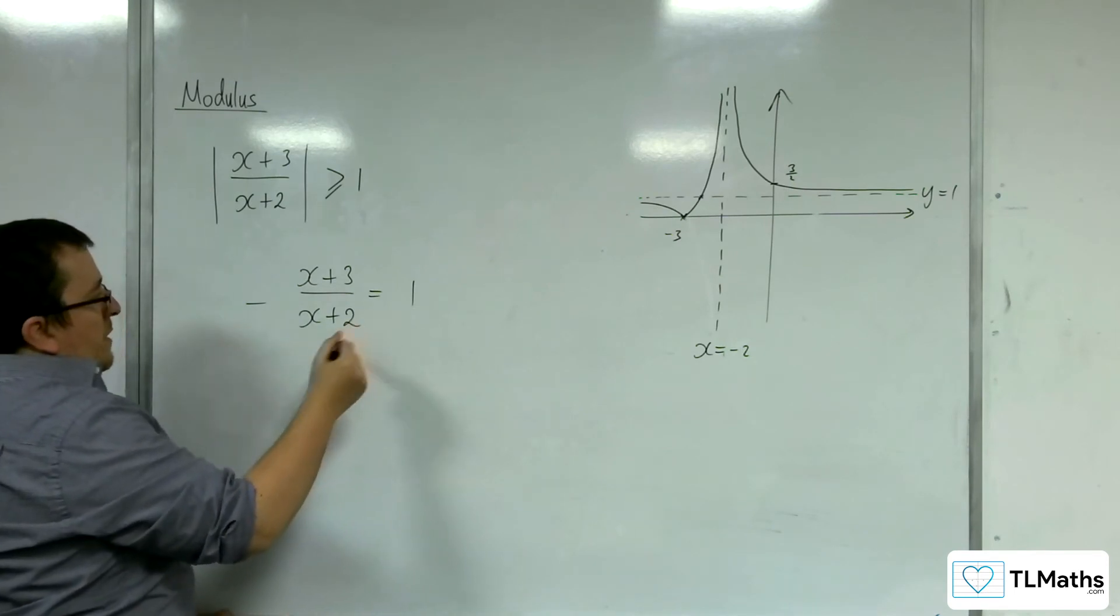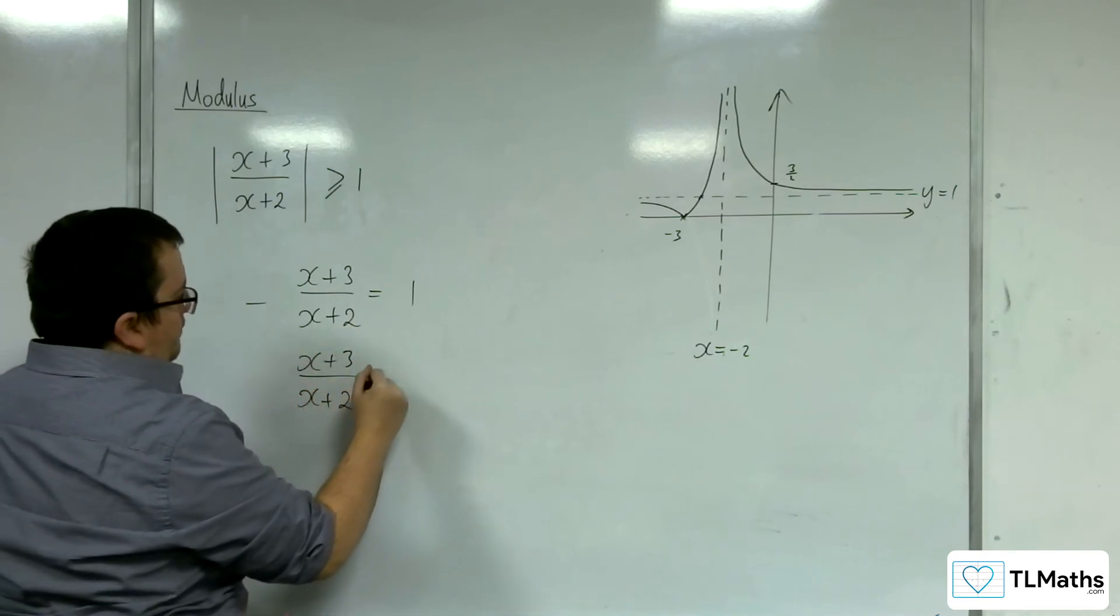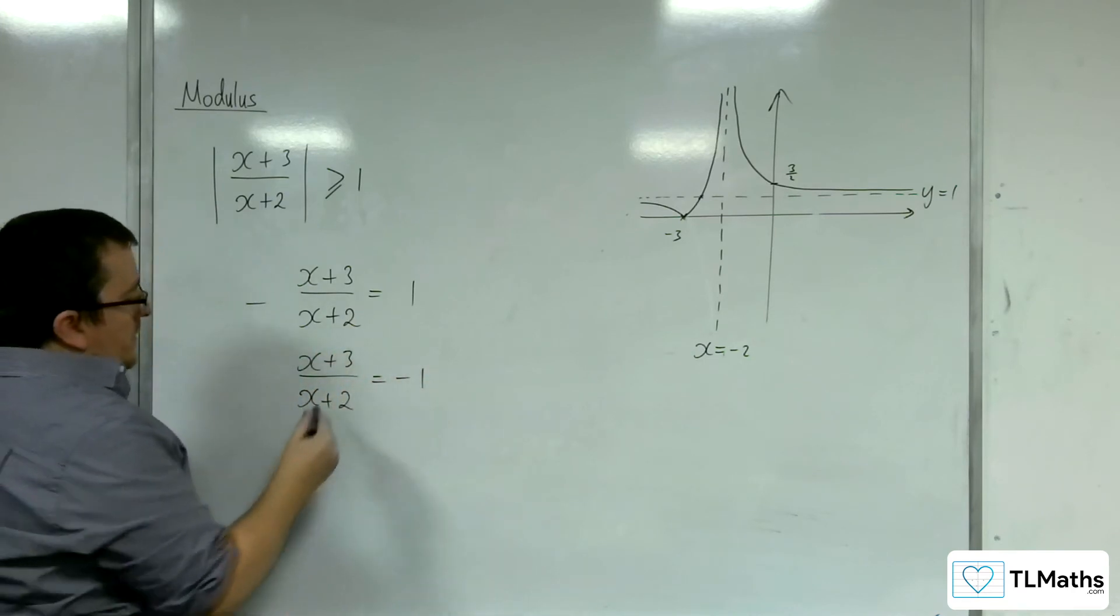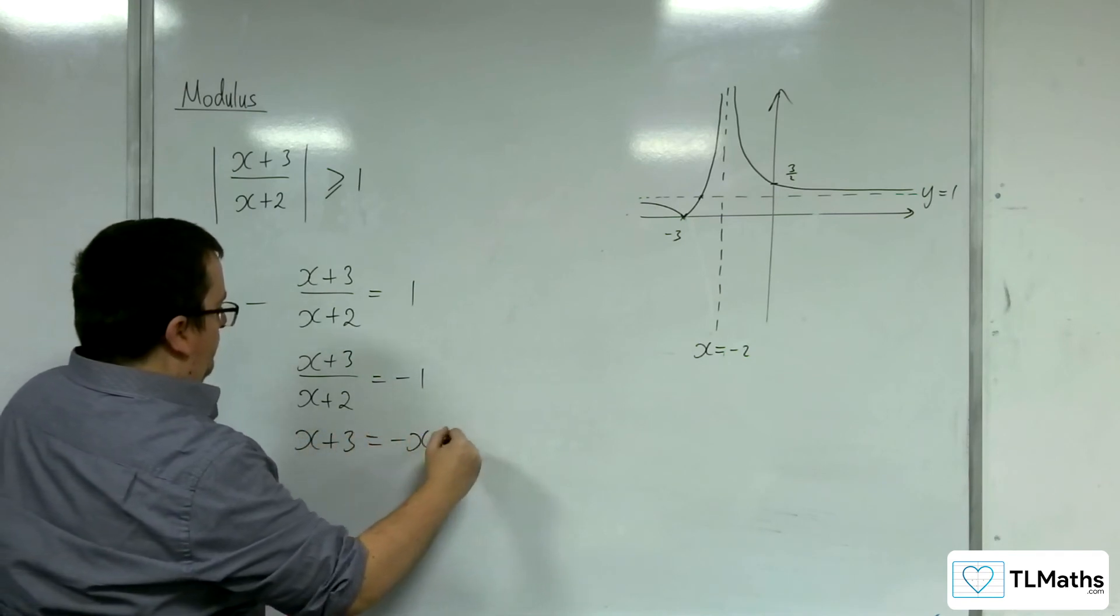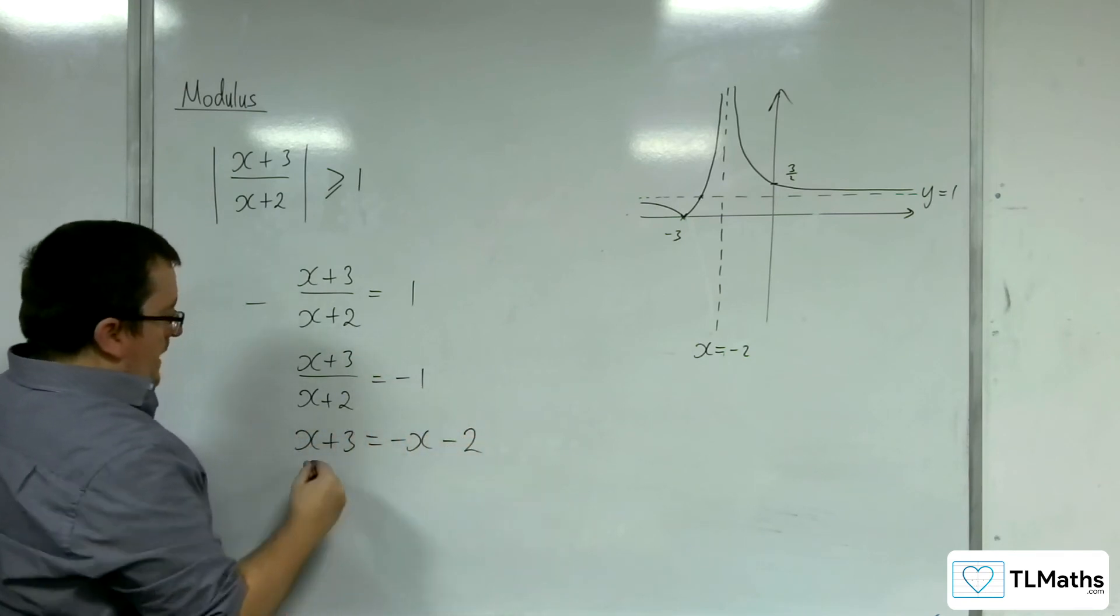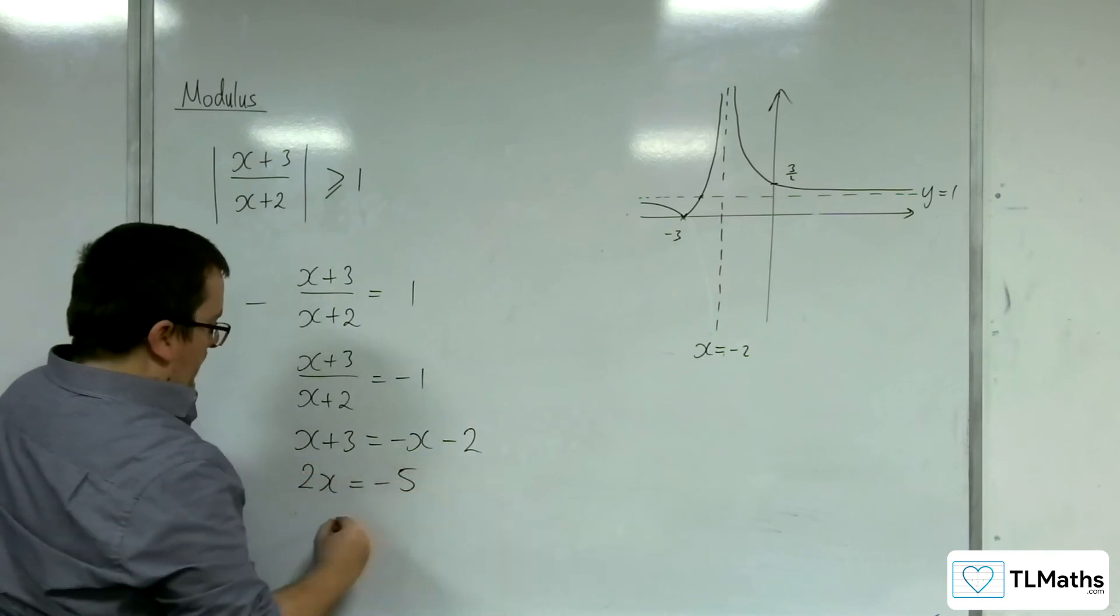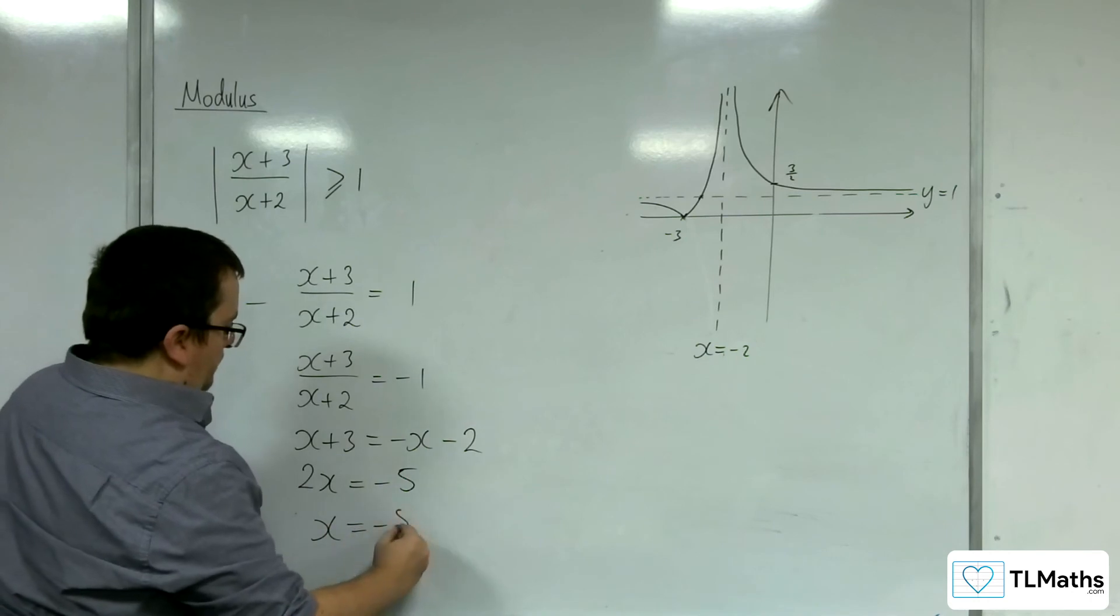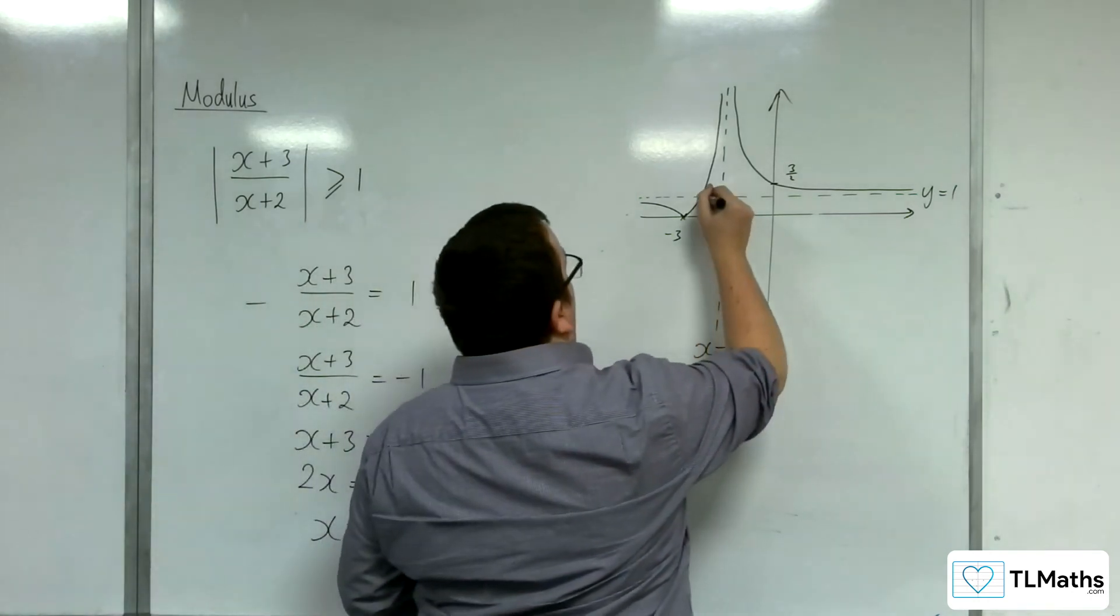So multiply through by minus 1 first, then multiply by the x plus 2, add the x to both sides, subtract 3 from both sides, and then divide through by 2. So this point here must be minus 5 halves.